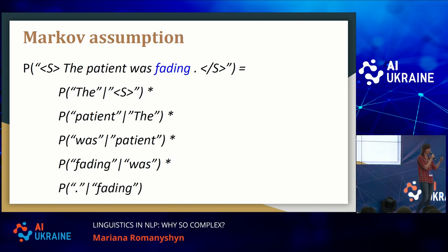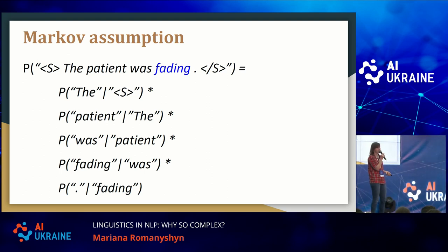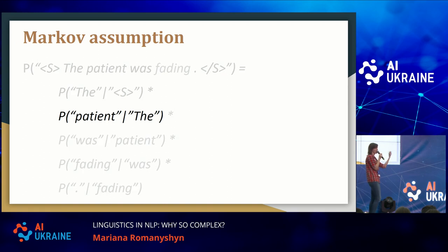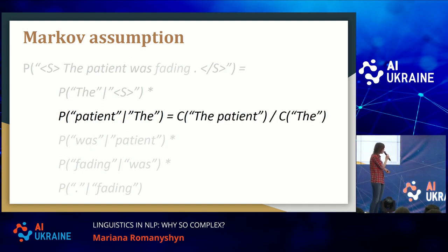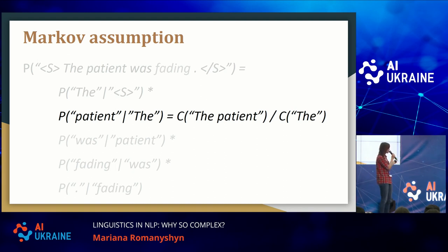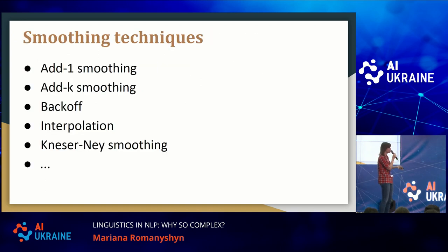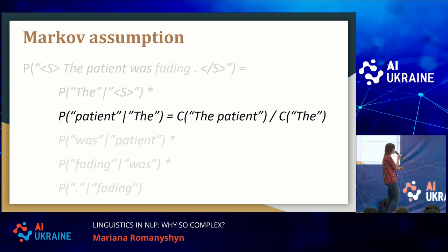But these chains can get really long. So we use the Markov assumption, which says that the future is independent of the past given the present. We simplify the formula so that each next word depends on N previous words — and this N can be one, two, three, or four, depending on the complexity you can afford. To estimate the probability of "patient" after "the," we take all occurrences of "the patient" in our large corpus and divide that by the number of occurrences of "the."